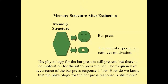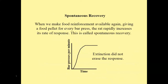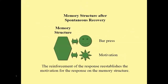How do we know the physiology for the bar press response is still there? When we make food reinforcement available again, giving a food pellet for every bar press, the rat rapidly increases its rate of response to a high rate. This is called spontaneous recovery. Extinction did not erase the response because the response rate increased more rapidly than in the first session. This suggests that there was an existing memory structure for the bar press. Reinforcing the response after extinction changed the memory structure — it now has both the response and the motivation for the response.